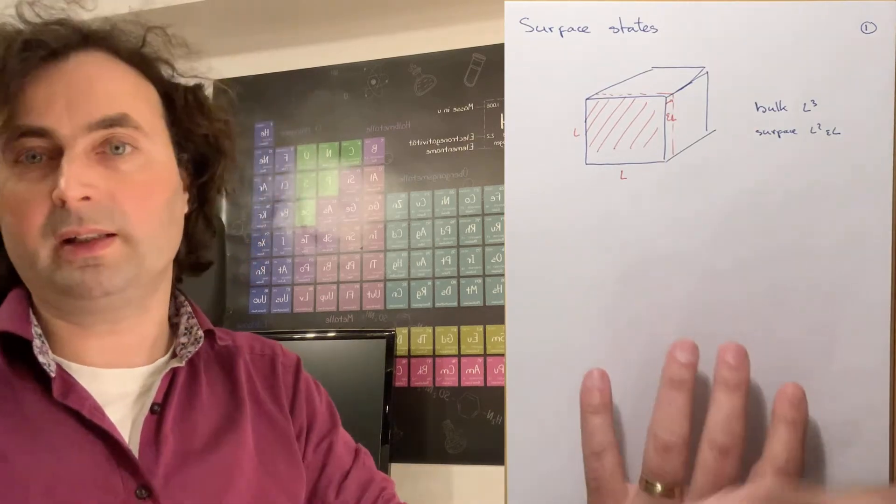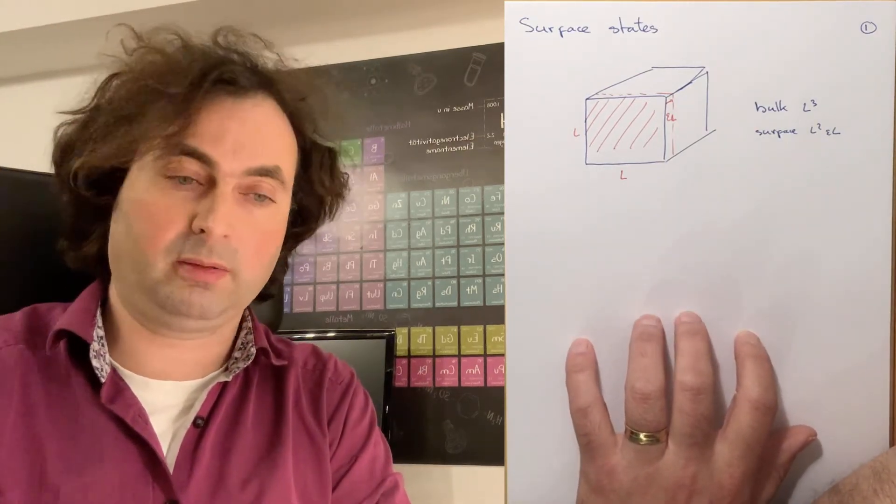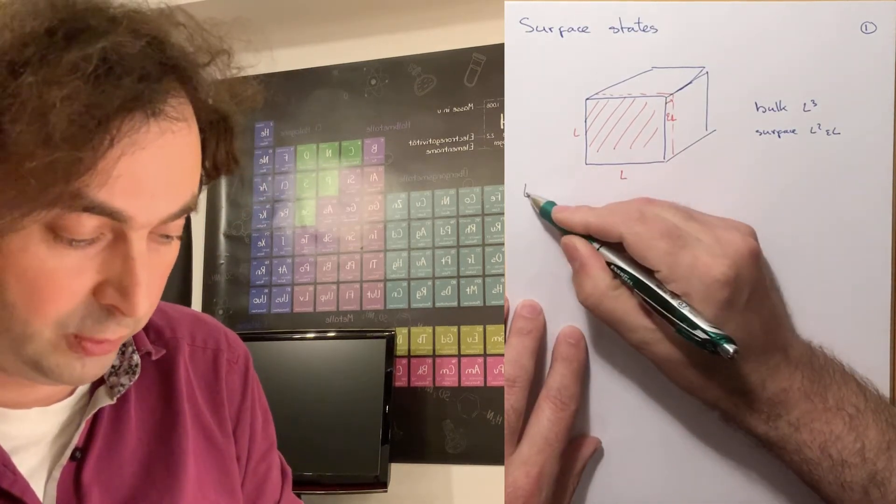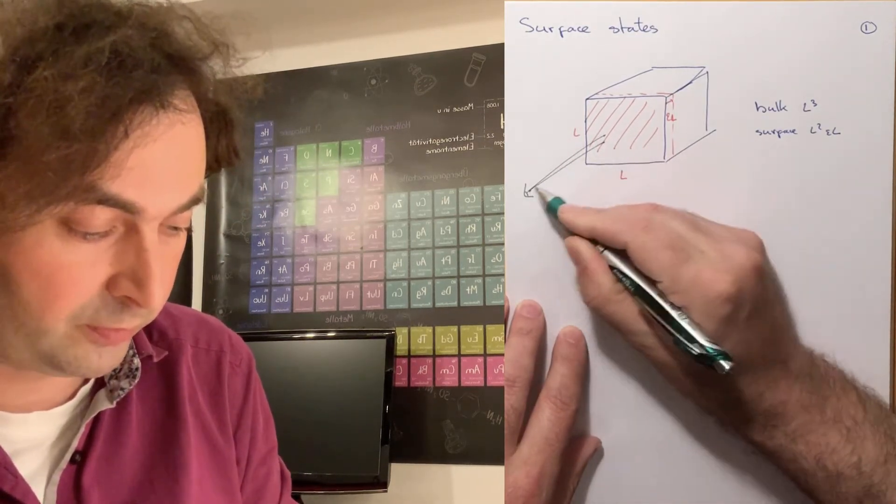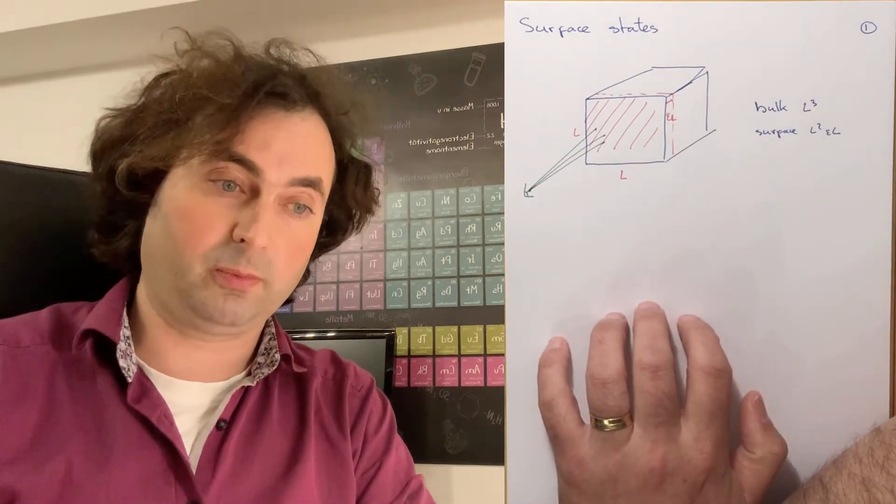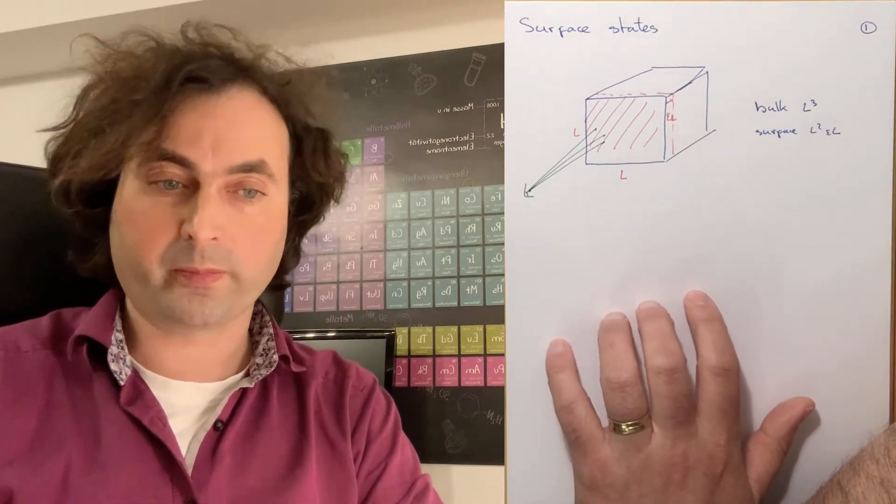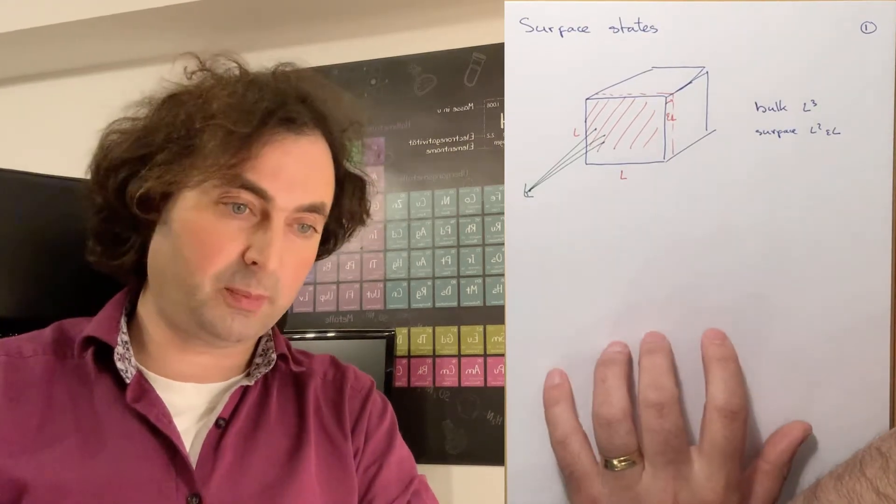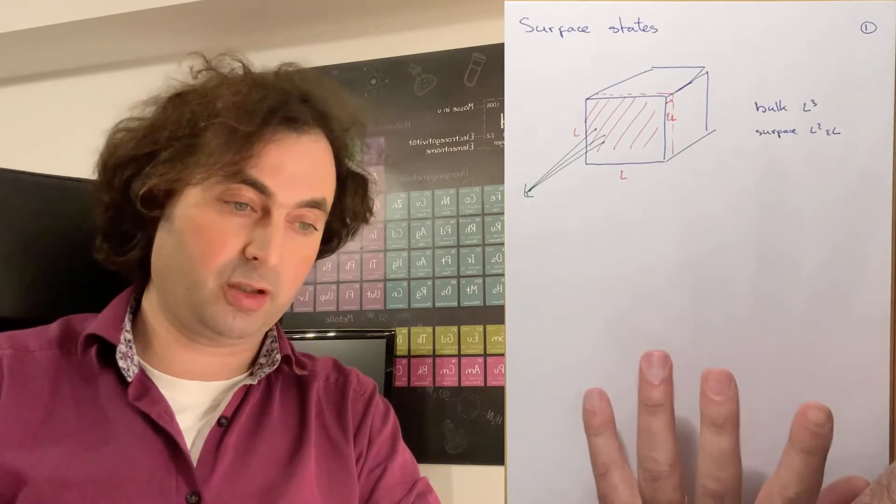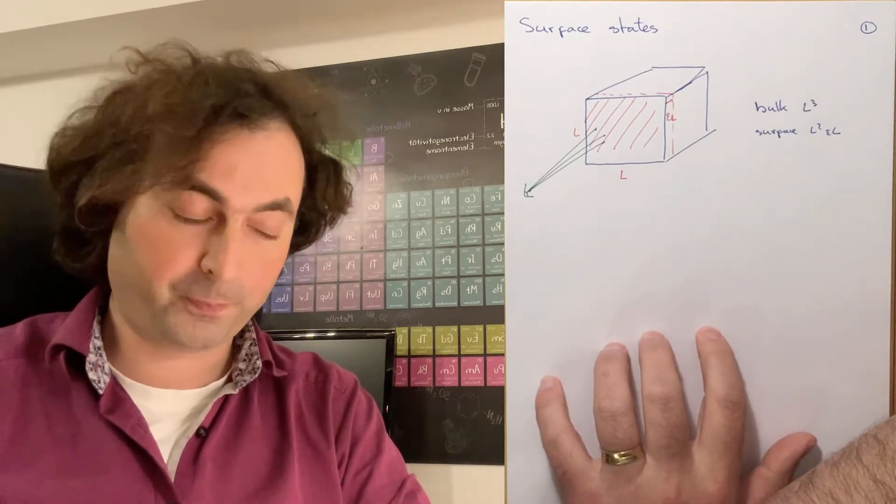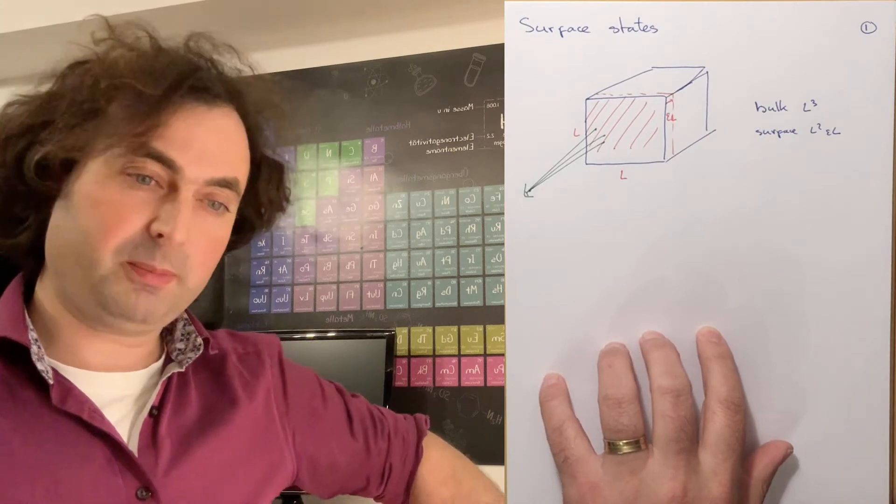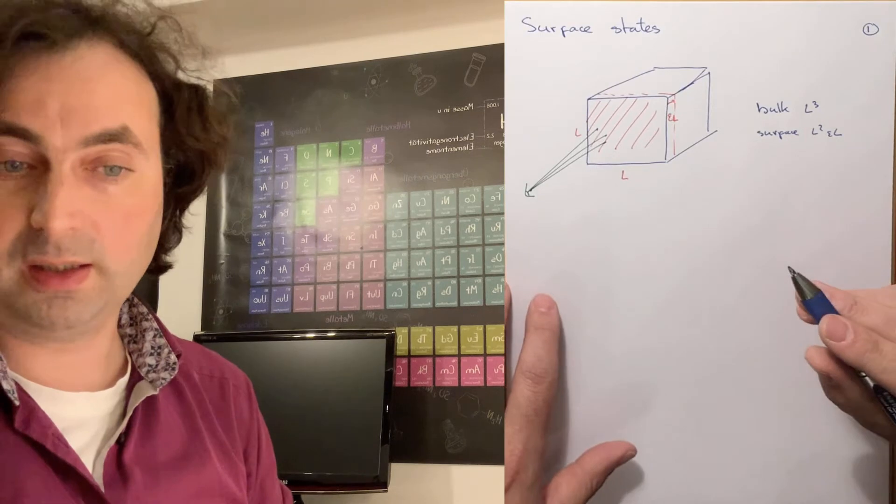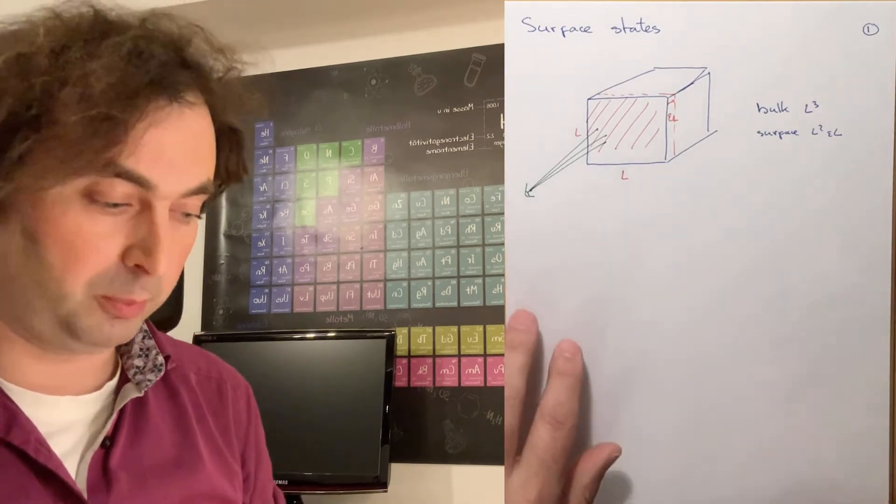Now there is one thing that makes a surface very important, and that is when we do a measurement, when we look at a crystal, you will always look at the crystal through the surface. So for properties that have a small penetration depth, you will actually measure the surface properties instead of the bulk properties. It makes sense to have a look at the surface properties of a crystal and see how they are different from the bulk properties.